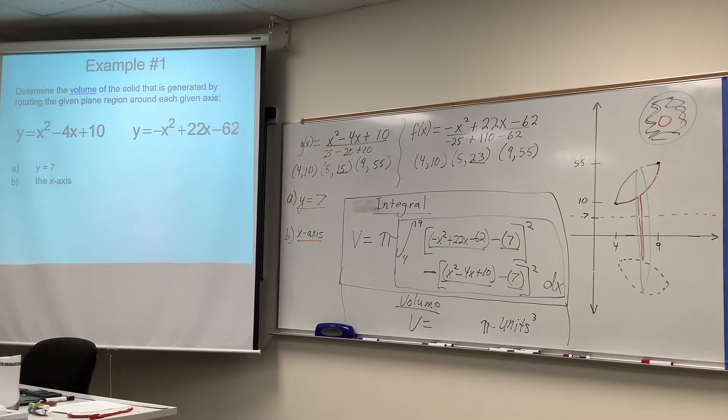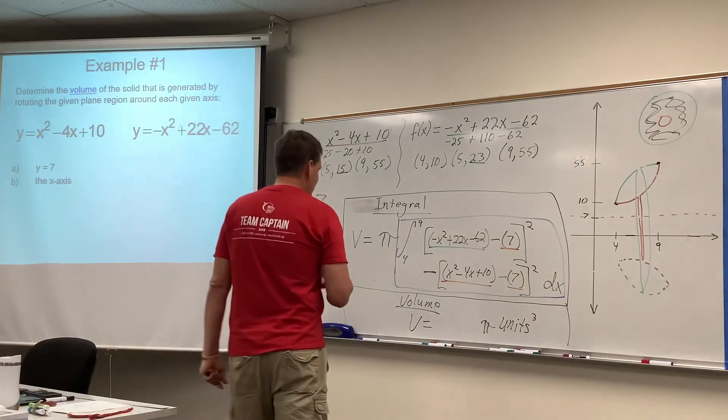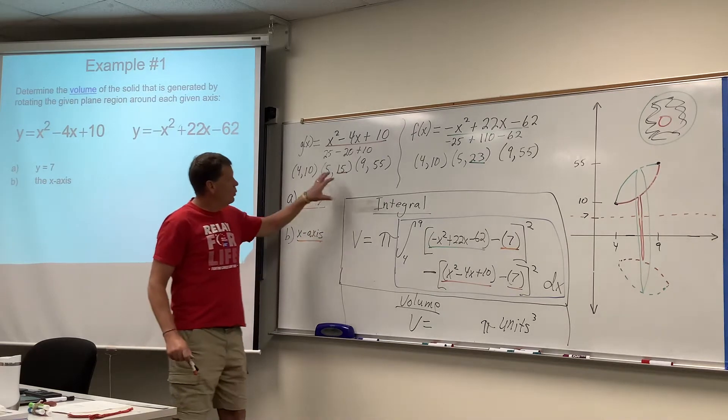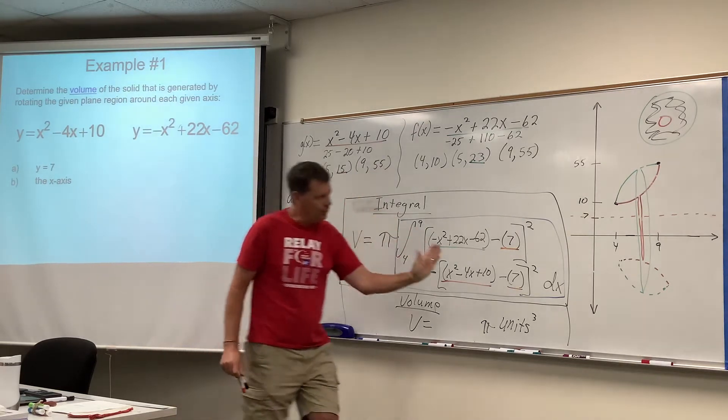Okay folks, example one, part B. You'll notice all we're doing is we're changing the axis of revolution. So I left a lot of the elements up here. We already discovered where the two cross. They cross at 4 and 9.